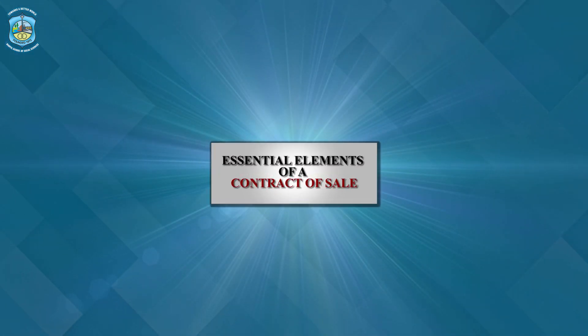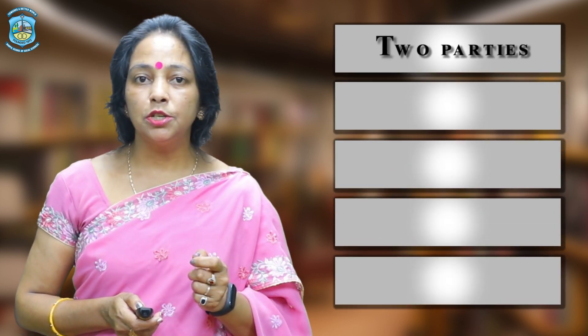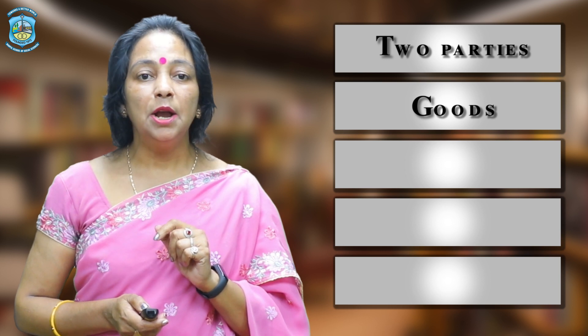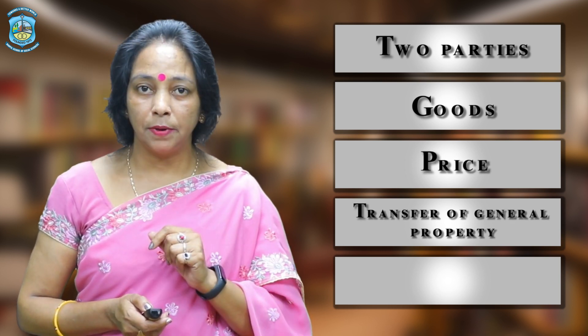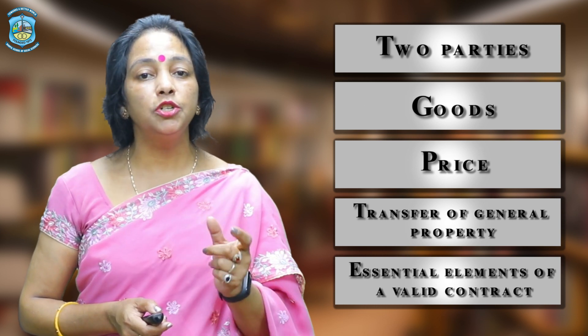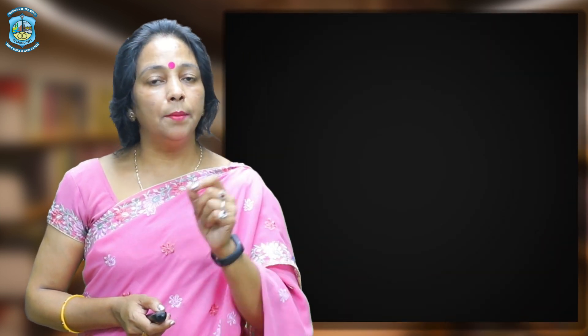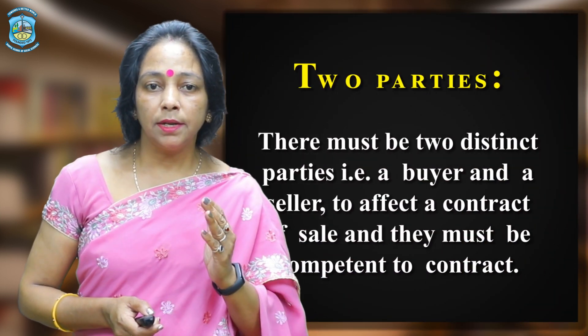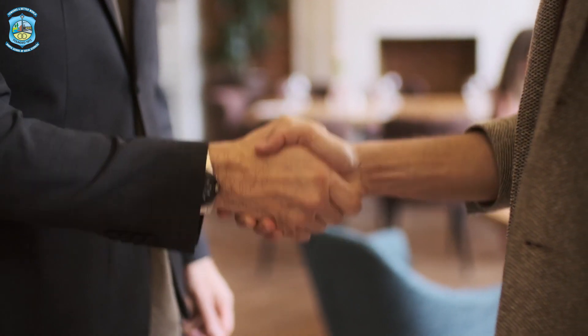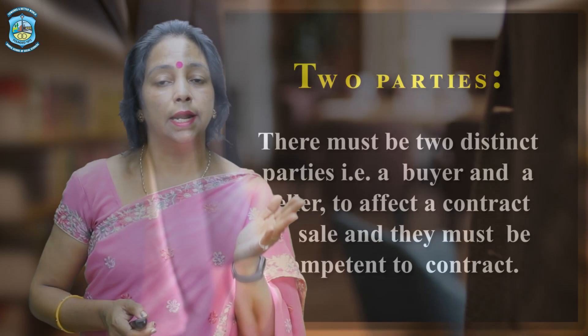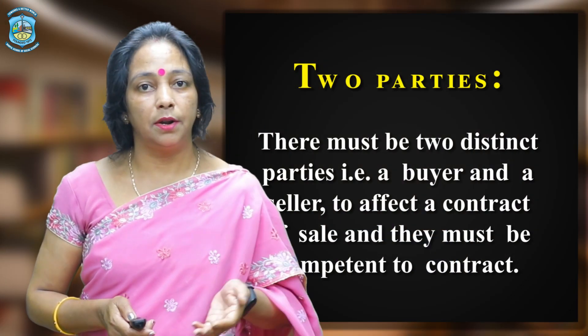Essential elements of a contract of sale. There are five important essential elements: number one is two parties, number two is goods, number three is price, number four is transfer of general property, and number five is essential elements of a valid contract. Regarding two parties, there must be two distinct parties — a buyer and a seller — to affect a contract of sale, and they must be competent to contract.